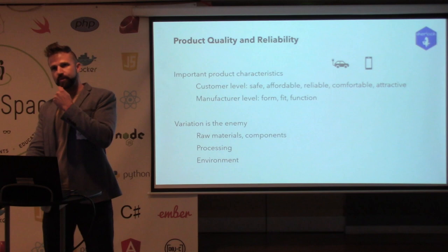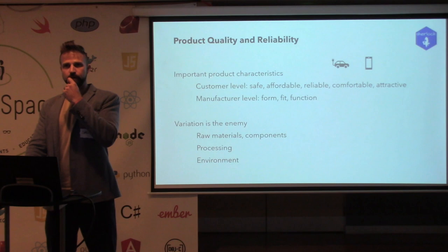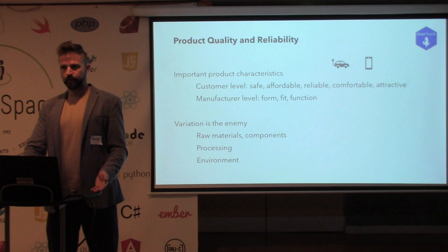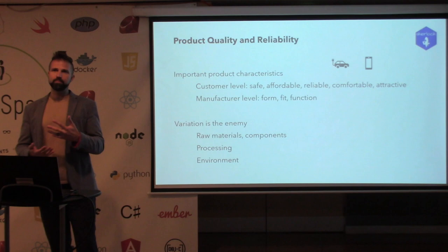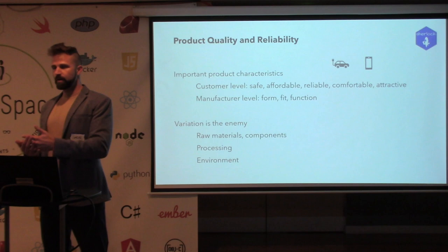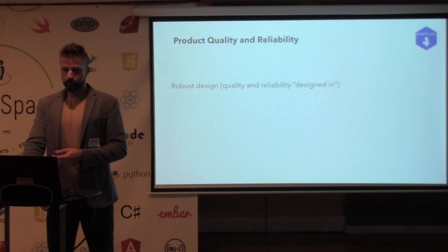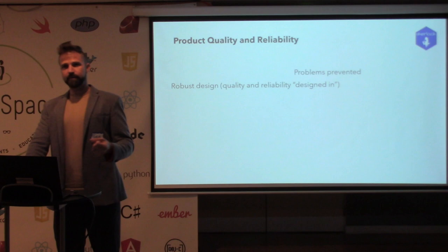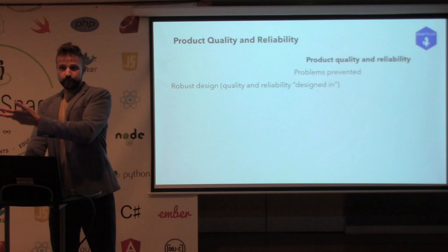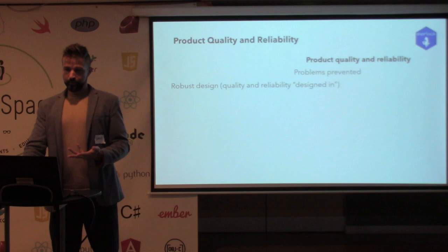Manufacturers want to minimize variation in the product because customers want a consistent experience. If your car behaves differently than your neighbor's with the same model, you won't be satisfied. For engineers who design and build stuff, minimizing variation is the most important thing we do. You can approach this in two ways: building quality and reliability into your product up front — a proactive approach — which hopefully prevents all those problems and results in a high-quality, reliable product.